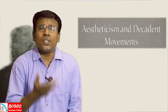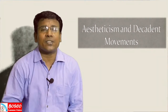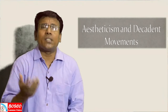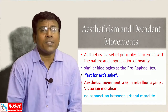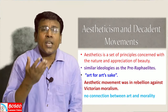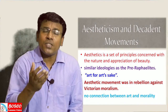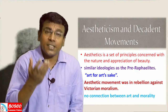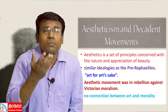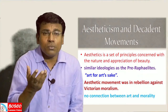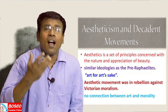Who are these group of artists or poets known as the Aestheticians or the Decadence? The question that comes to mind is: what is the meaning of Aesthetics? Aesthetics is a set of principles concerned with the nature and appreciation of beauty. It is the branch of philosophy which deals with questions of beauty and artistic taste.